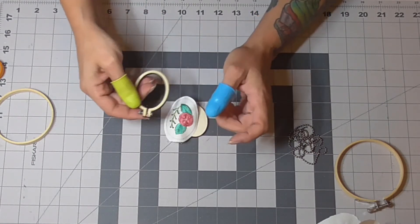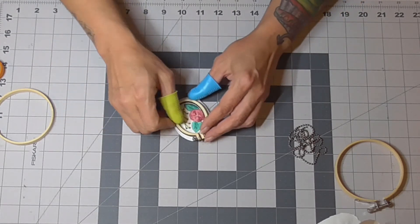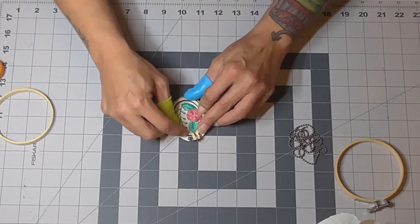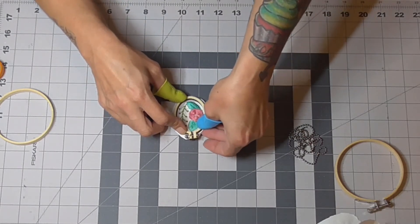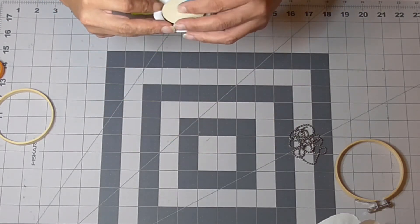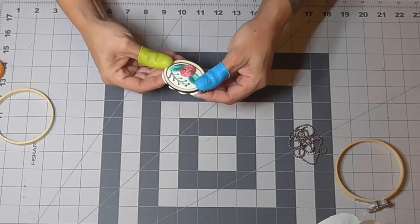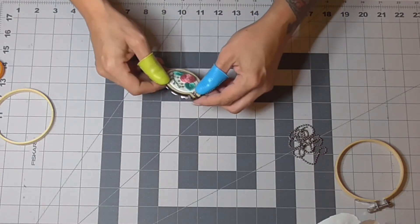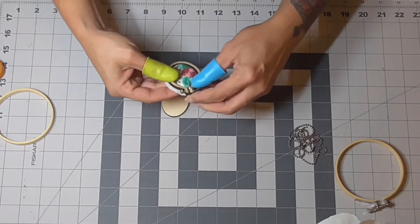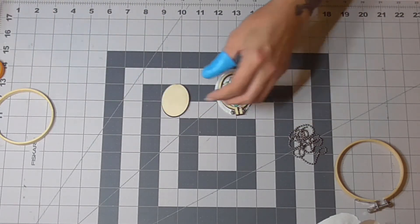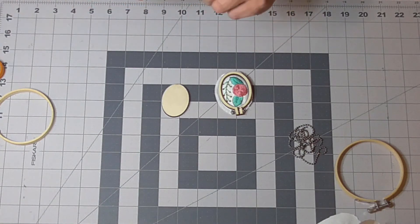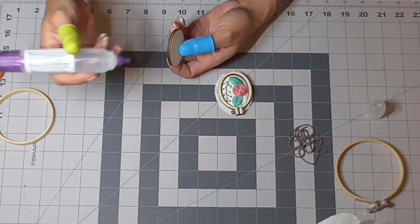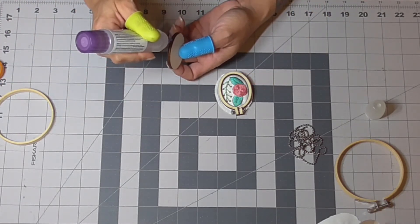All right, that looks good. There's a little bit of excess on the back, which is good. Now, because this is going to get handled more than regular hoops that just hang on the wall, you're going to wear it as a necklace or use it as a keychain or something, you're going to run a little bit of glue on the inside.